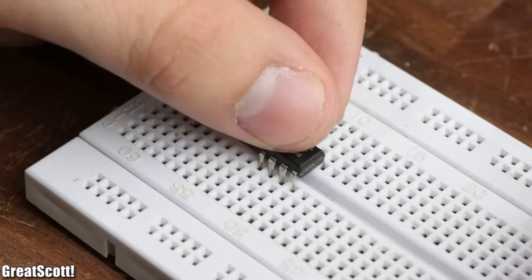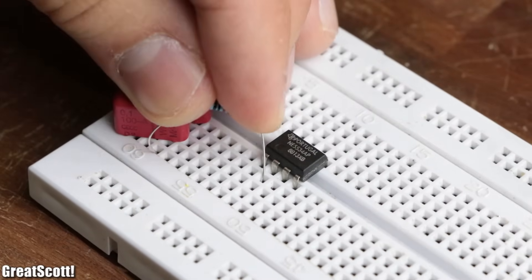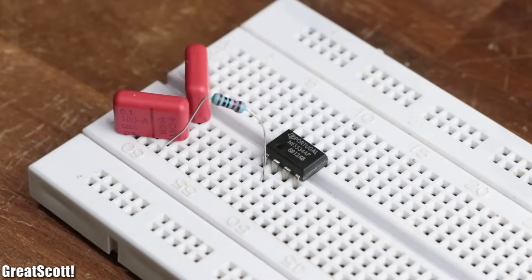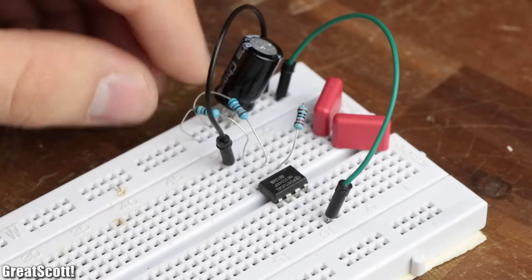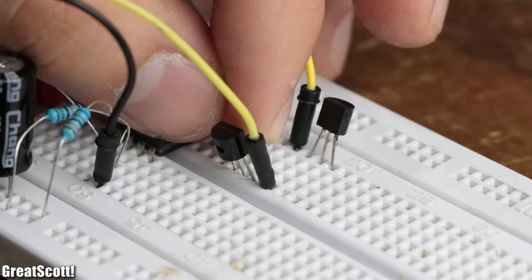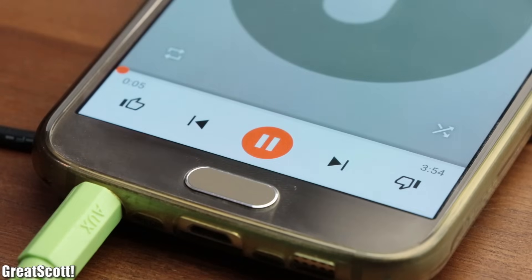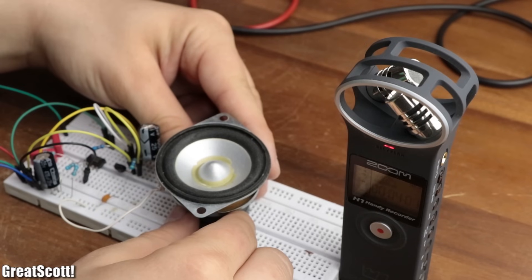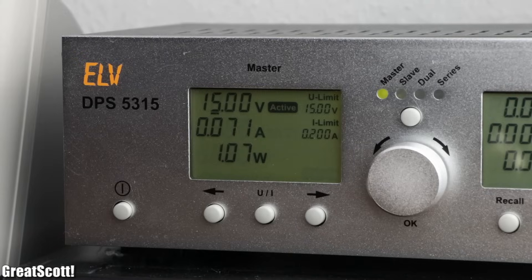In a previous video I showed you how to create a simple class AB audio amplifier that consists of an NE5534 op-amp and a push-pull bipolar junction transistor output stage. Now even though the circuit did work decently, there was one problem. It's power loss.